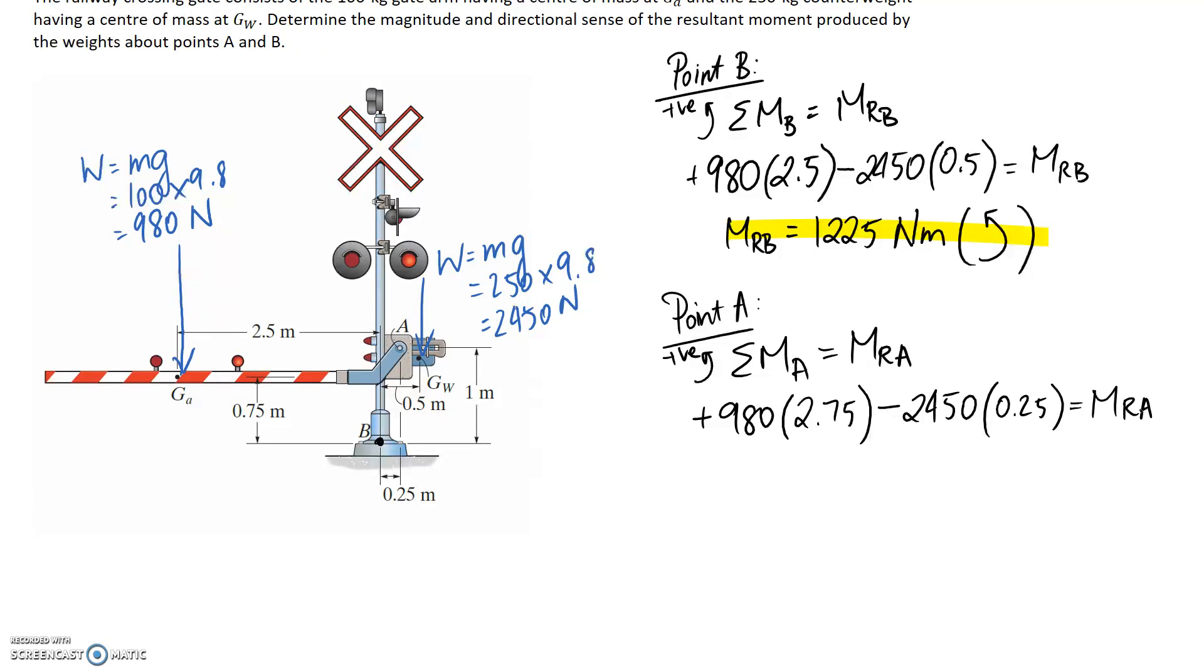And it's equal to the resultant that we're trying to calculate. So if you plug in the numbers, you end up with an answer of 2083 newton metres. And again, we need to tell or report the direction. If it's come out positive, that means it's in the positive direction as per your sign convention. So it's going to be going anti-clockwise. This is the other answer for that one.